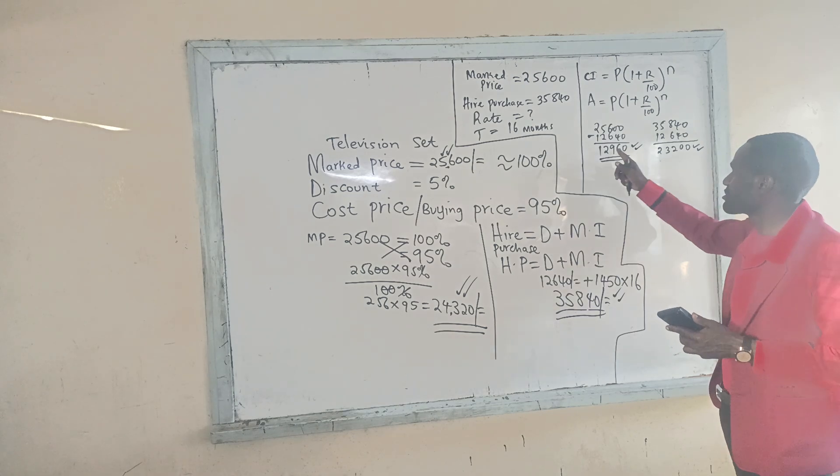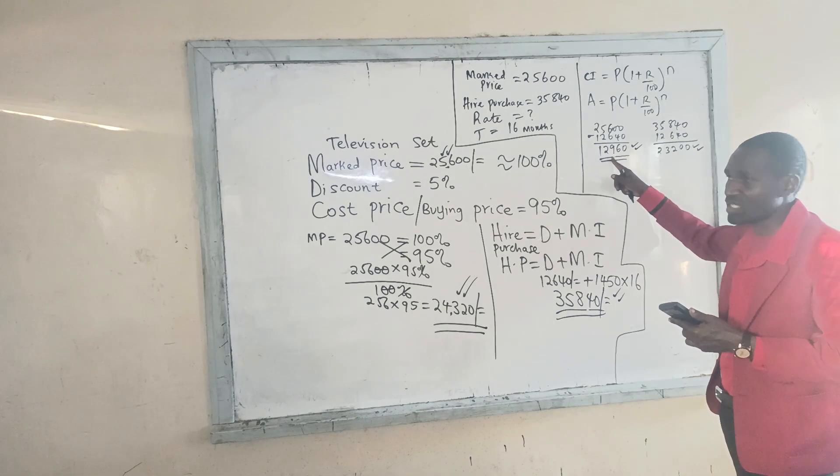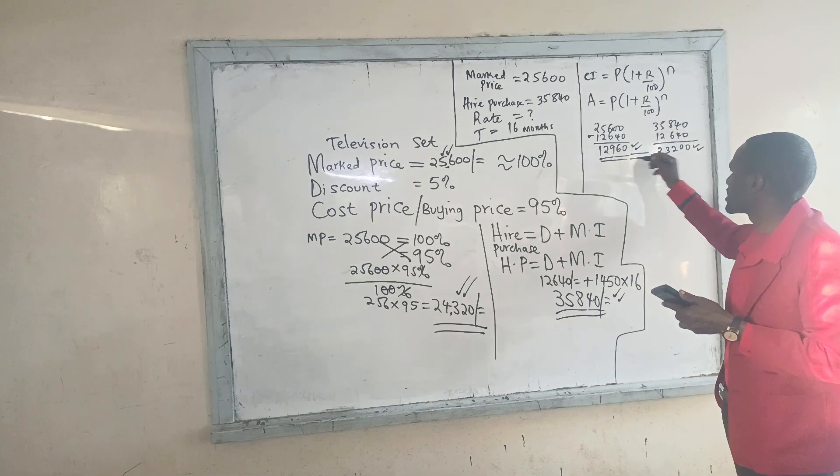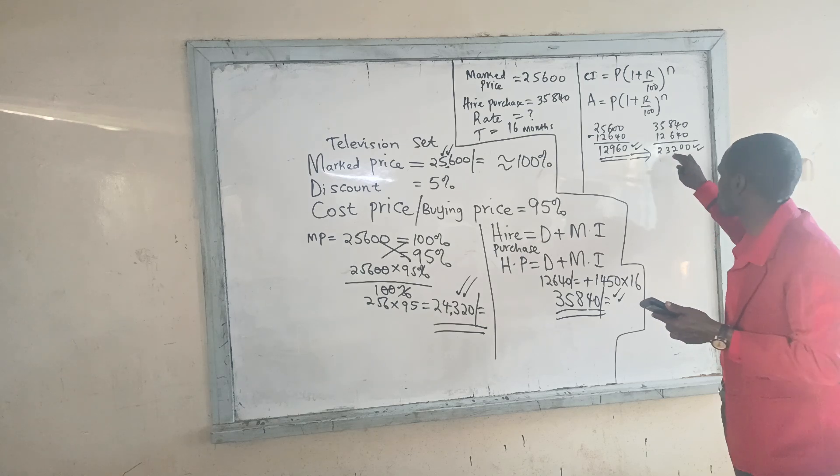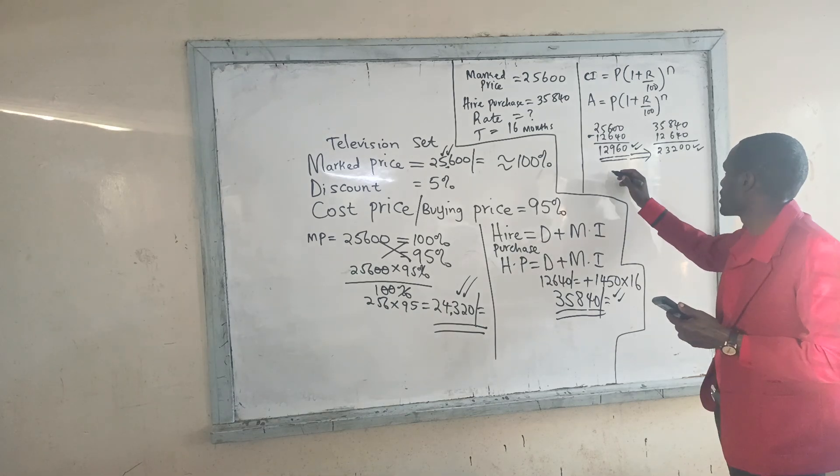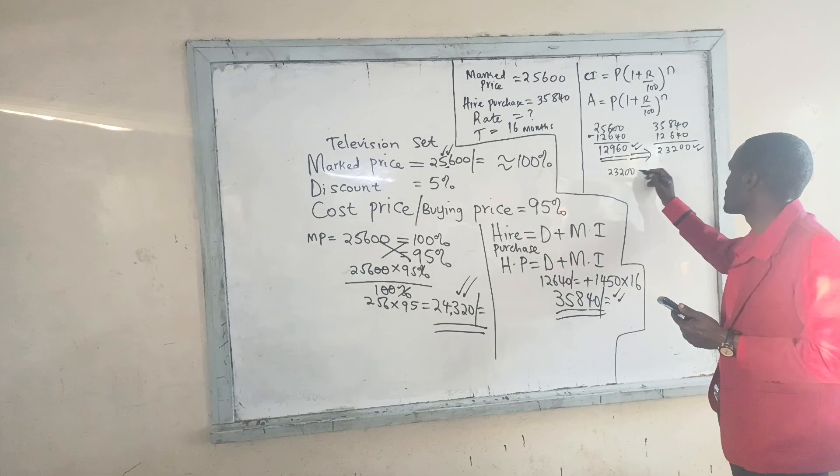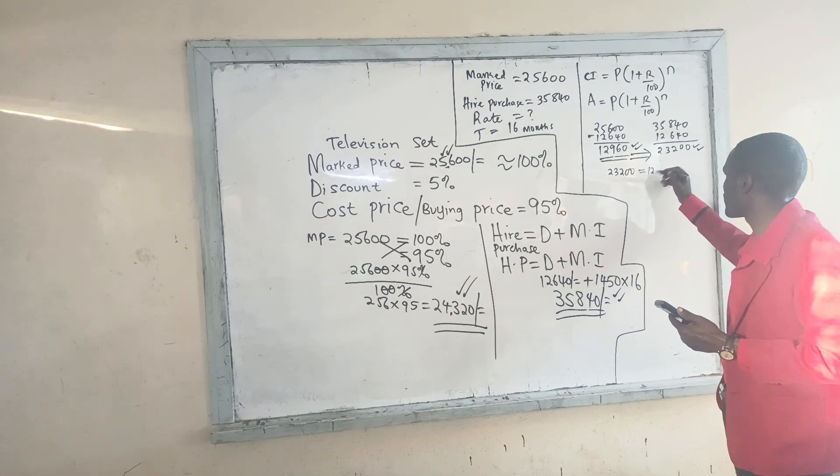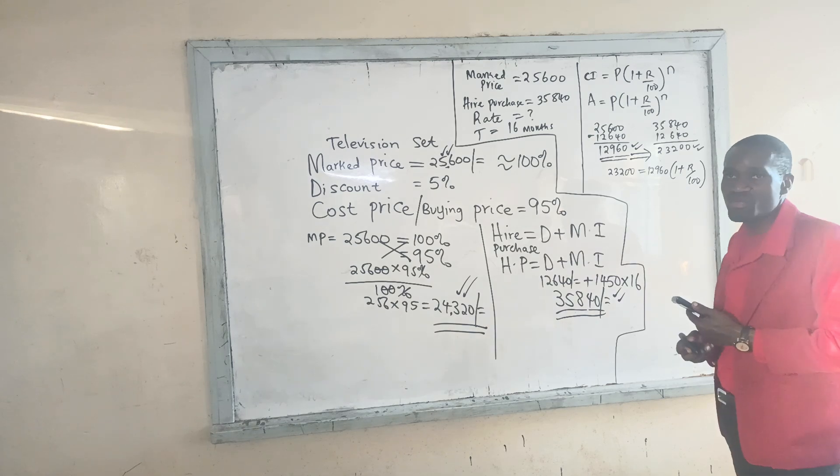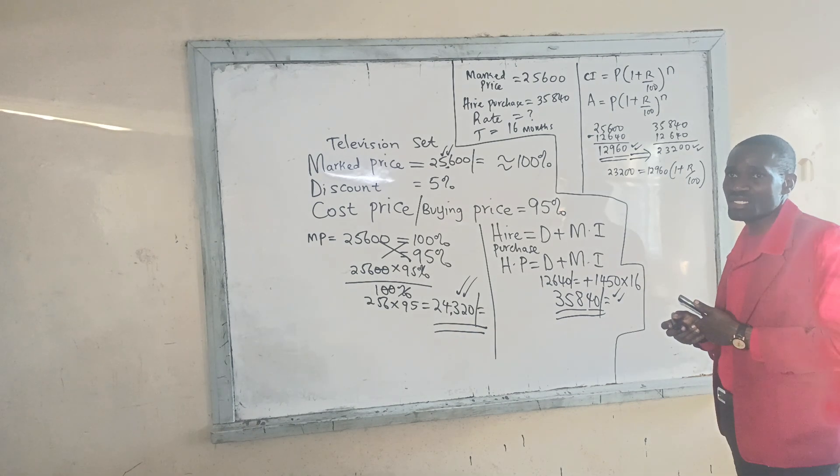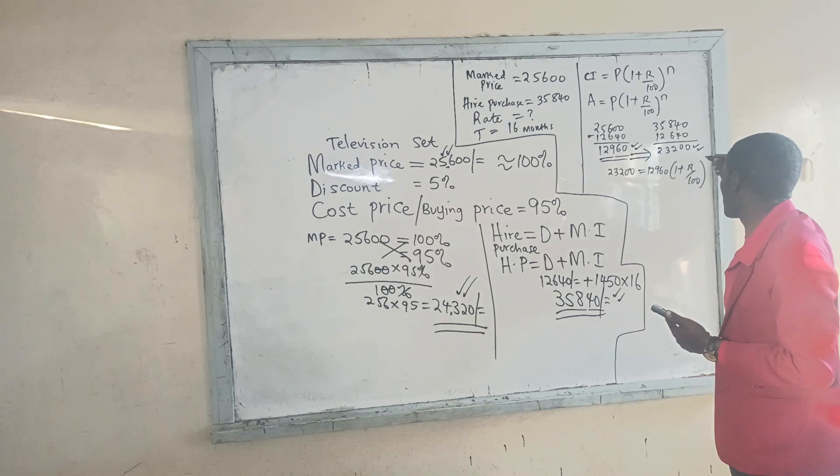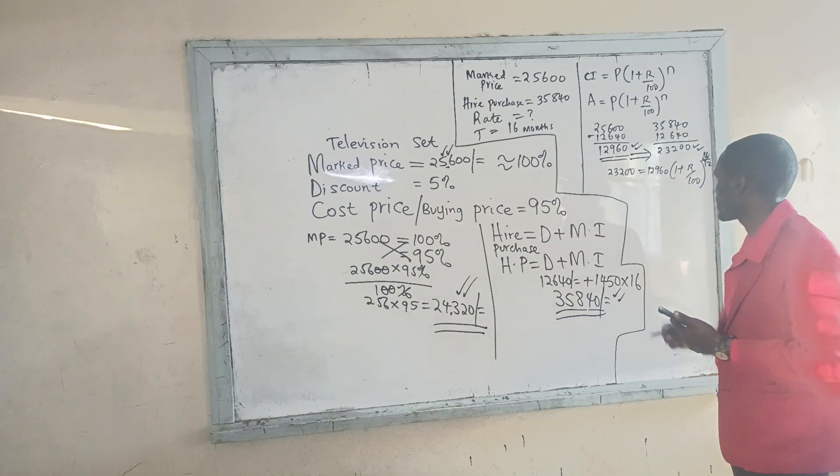So I want to see how this money that I was to pay initially, if I was to actually get this item on cash price, end up accumulating interest until it actually accumulated to 23,200. So we shall say 23,200 as our amount is equal to the principal that I was supposed to pay, 12,960, into 1 plus the rate is not known out of 100, raised to the duration. We have been told 16 months. So I will actually be able to use 16 out of 12.